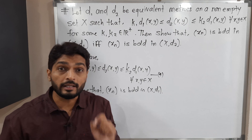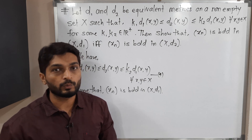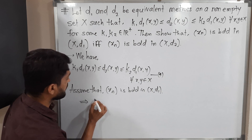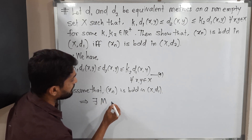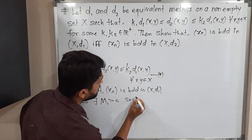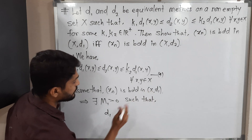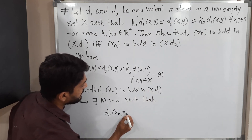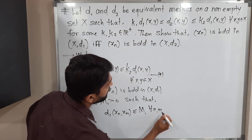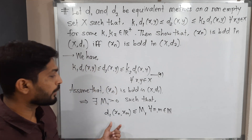The definition of a bounded sequence: a sequence is bounded if there exists a positive real number M such that d(xn, xm) ≤ M. So since the sequence is bounded in (X, d1), by definition there exists m1 > 0 such that d1(xn, xm) ≤ m1 for all n, m belonging to the set of natural numbers.